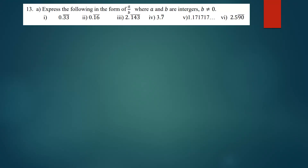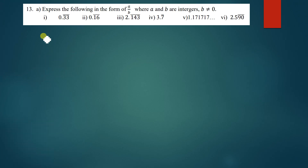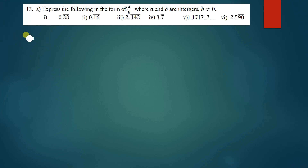Let's start solving. The first question is 0.33 repeating. How do we express that as a fraction? There are just a few steps you need to follow. I'm going to equate what I've been given — 0.33 — where the 3s are repeating. How do we express this as a fraction?